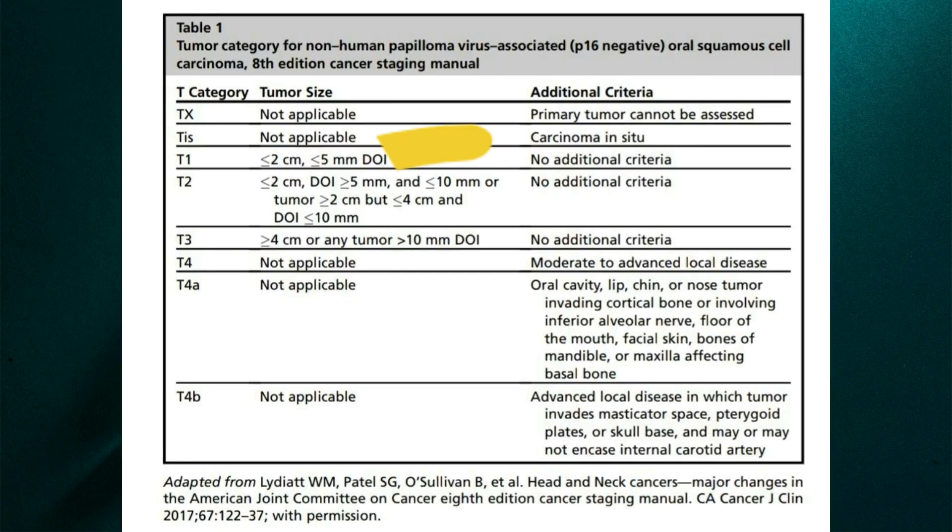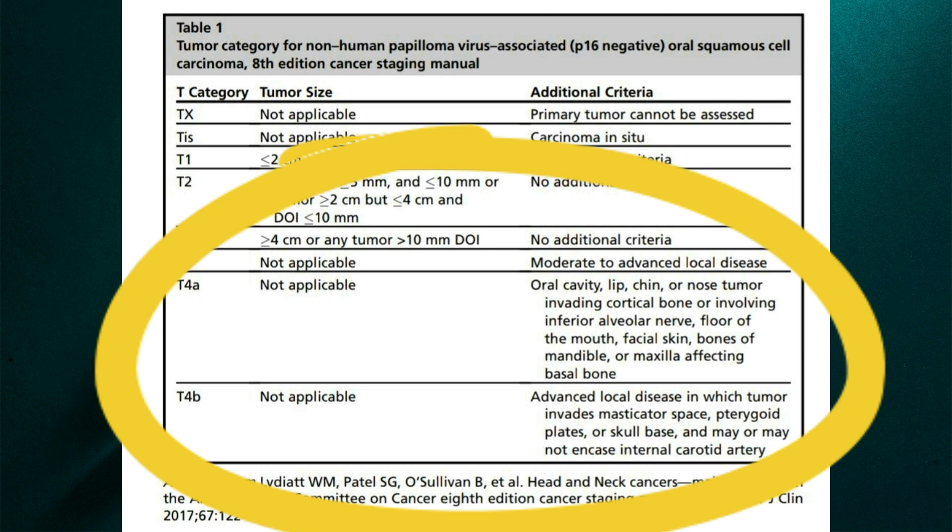Let's now go to the T4 category. For the T4 category, you have T4a and T4b. T4a is the moderately advanced local disease, while T4b is the very advanced local disease. For T4a and T4b categories, they do not consider the surface dimensions of the lesion or the DOI. T4a is applicable to the lesions of the oral cavity, lip, chin, or nose tumor which invades the cortical bone, or the ones which involve the inferior alveolar nerve, or the floor of the mouth, the facial skin, the bones of the maxilla and the mandible, etc. T4b is an advanced local disease in which the tumor invades the masticatory space, the pterygoid plates, or the skull base. It may or may not encase the internal carotid artery. That's all when it comes to T.